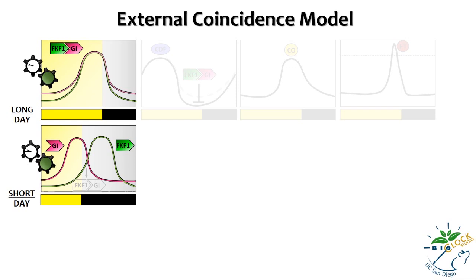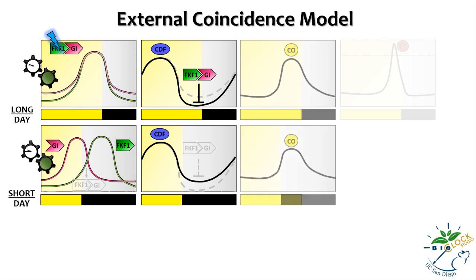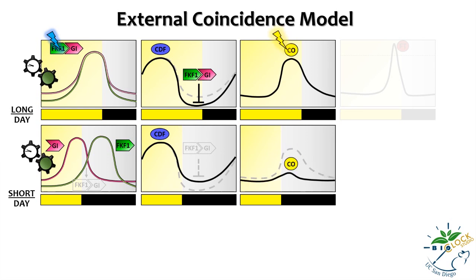On top of that, the complex can only be formed when FKF1 is activated by light — more precisely by blue light — because FKF1 is a blue light receptor. As a result, during a short day, an insufficient amount of FKF1-GI complex is produced, so CDF proteins undergo less degradation. Even so, by the end of a short day, the quantity of CDF protein decreases due to clock regulation, and this could potentially allow a substantial amount of CO protein to form. However, CO also requires light stabilization, which means that at the end of short days, CO protein quantity remains low because there is no light to stabilize the CO protein generated.